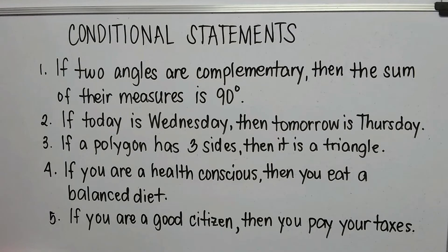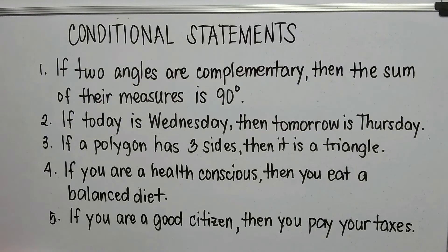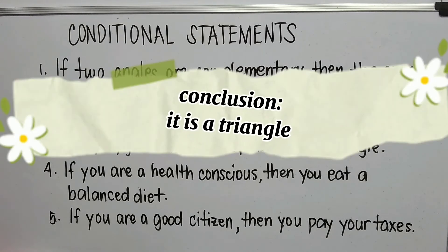Number three: if a polygon has three sides, then it is a triangle. Our hypothesis is a polygon has three sides, and the conclusion is it is a triangle.